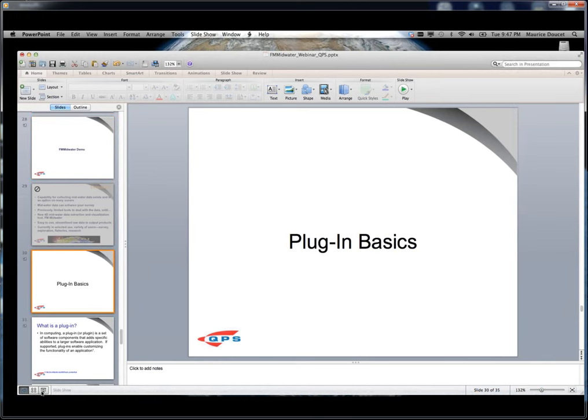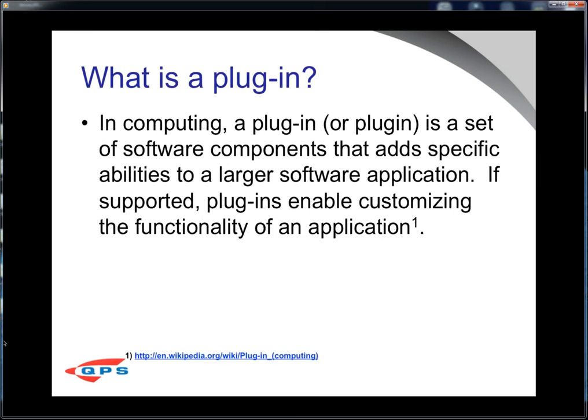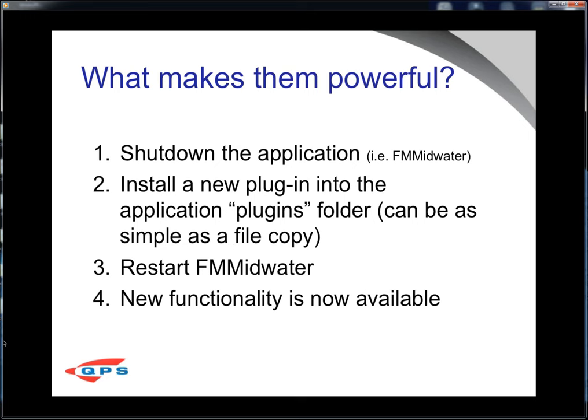Now let's talk about plug-ins. These are currently in the 7.3.2 release; more are coming in the next patch and will be out in a big way in 7.3.3. A plug-in is a software component that extends the capabilities of a larger software product without having to modify the source product. We can extend the capabilities of tools like the mid-water tool and the FM Geocoder toolbox without releasing a whole new version — we just post a new capability as a plug-in on the web, you download it, put it in the plug-ins folder, and that capability is instantly available. You shut down the app, put the plug-in in a folder, restart the app, and you have the new functionality.